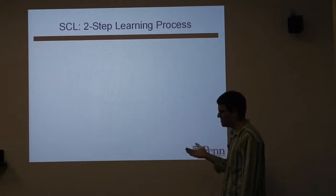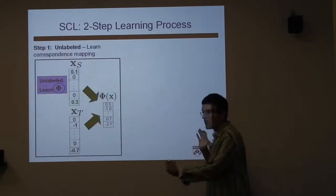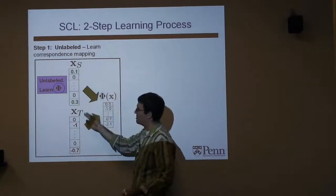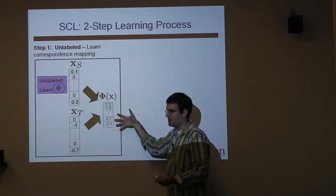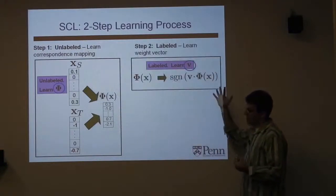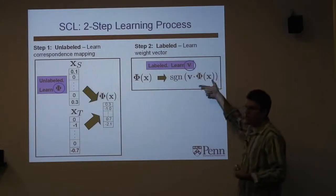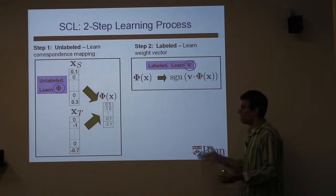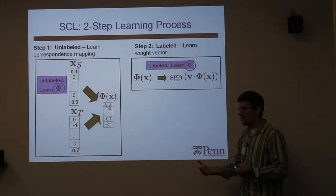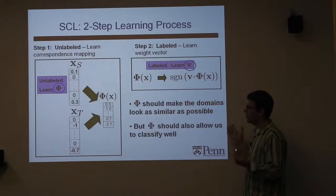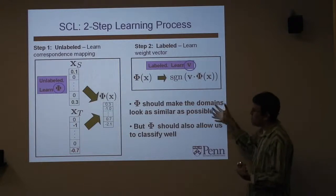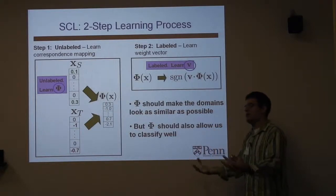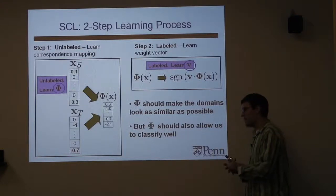SCL is a two-step learning process. In the first step, we get unlabeled data from both the source and target domains and learn a common shared representation that maps source instances and target instances into the same low-dimensional vector space. Then we take this low-dimensional representation and learn features for it to do good classification. Phi provides us with new features, and we learn weights on those features.